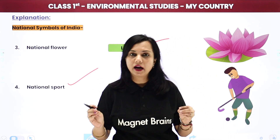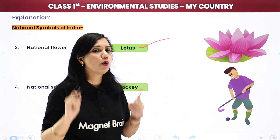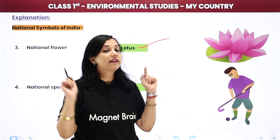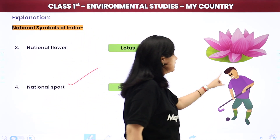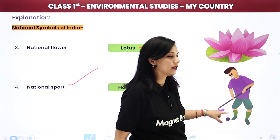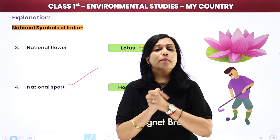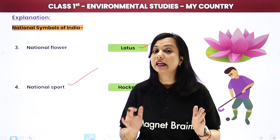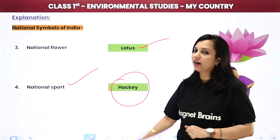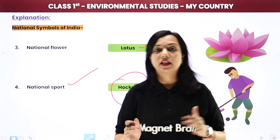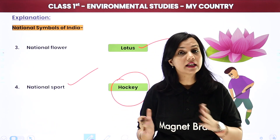Next one is national sport. Hamari country ka national sport kya hai? Please my dear students, don't get misunderstood - cricket is not our national sport. Hockey is our national sport. You can see this person - he is holding a hockey bat and he is playing hockey. Aur hockey hi hamara national sport hai. Bahut se log cricket mein confused ho jaate hain, but cricket humari country ka national sport nahi hai - humari country ka national sport hai Hockey. Toh aapko yeh national wali saari chizein learn karni padein gi - national animal kaun sa hai, national flower kaun sa hai, national sport kaun sa hai, humari national flag mein kitne colors hain.